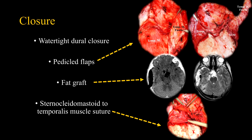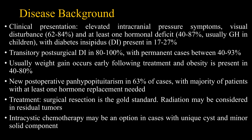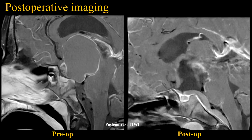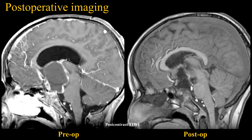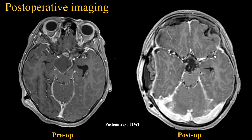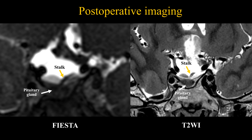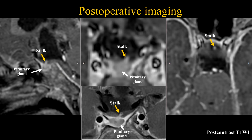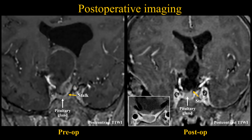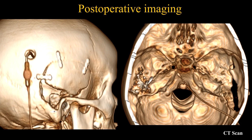This approach demands meticulous closure that should be planned from the beginning. General key points of craniopharyngiomas are reviewed, along with clinical highlights and postoperative endocrinological details. Postoperative imaging demonstrated complete tumor resection. Preservation of the pituitary gland and stalk is demonstrated, with a comparative view of pre- and post-operative scans showing the surgical corridor.